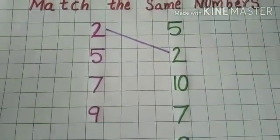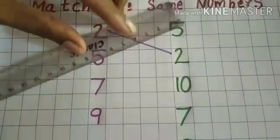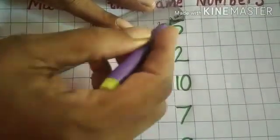Next is number 5. So you have to match 5 by 5. Same numbers. Match the same numbers.